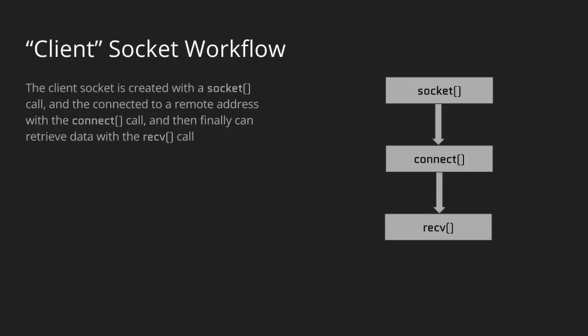In C, there's a socket function you use, and you store the result in an integer — that's basically a descriptor, which is how we refer to our socket. That integer allows us to make any future calls on our particular socket. In the socket call, we specify the type of socket. In this case, we're going to work with TCP, since there are many tools that let us see TCP traffic without writing extra utilities.